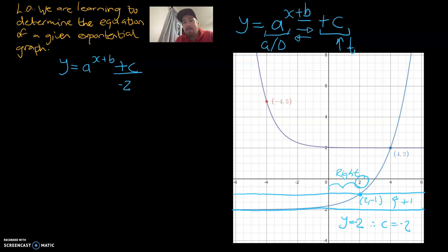And because it's now at positive 2, what that means is our b value is going to be negative 2 as well. So we're going to have y is equal to a, x minus 2, minus 2 again.